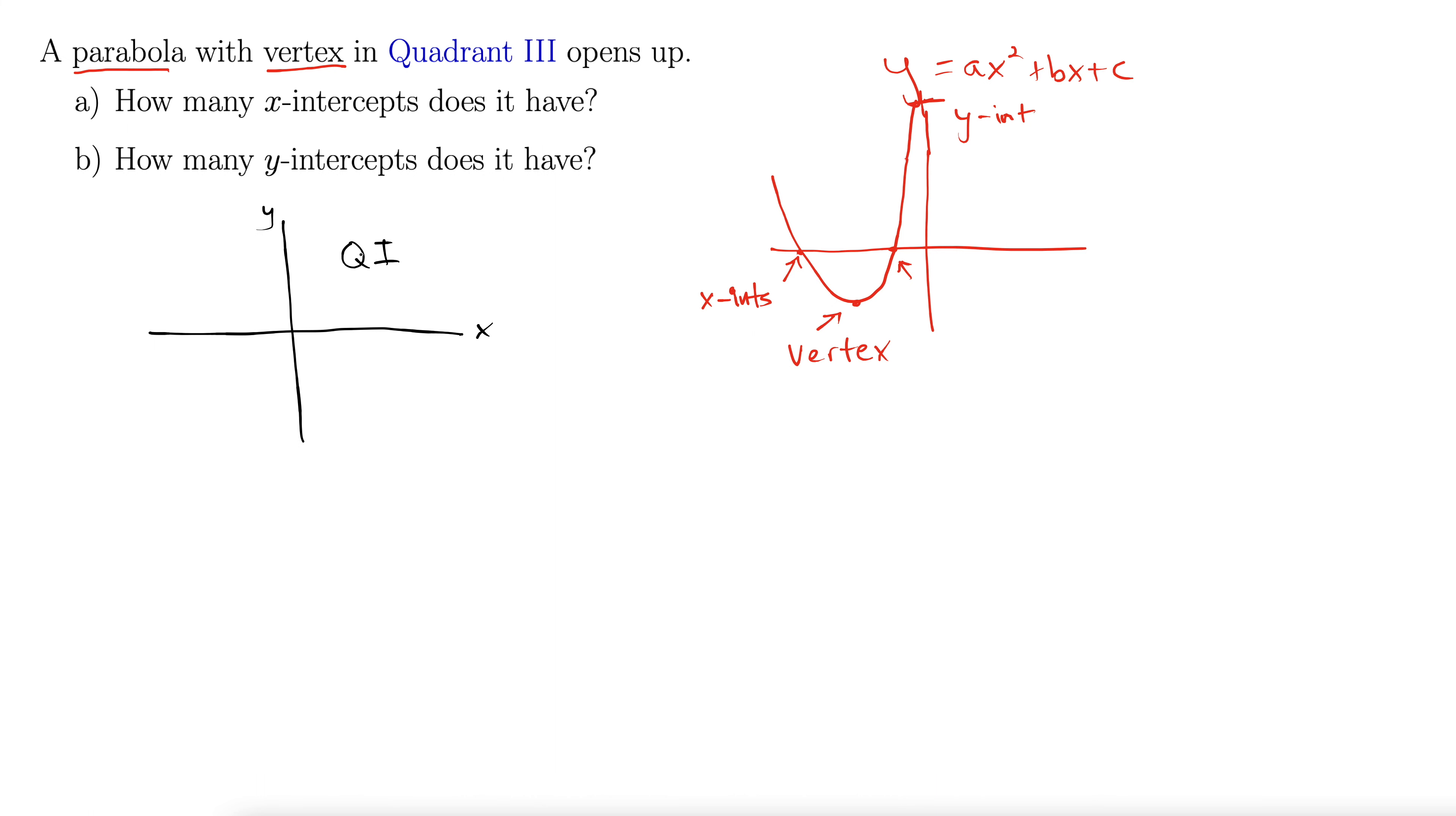And these are done with Roman numerals. And then you work your way around counterclockwise. So then you go here, quadrant two. Down here, quadrant three. And over here to quadrant four.